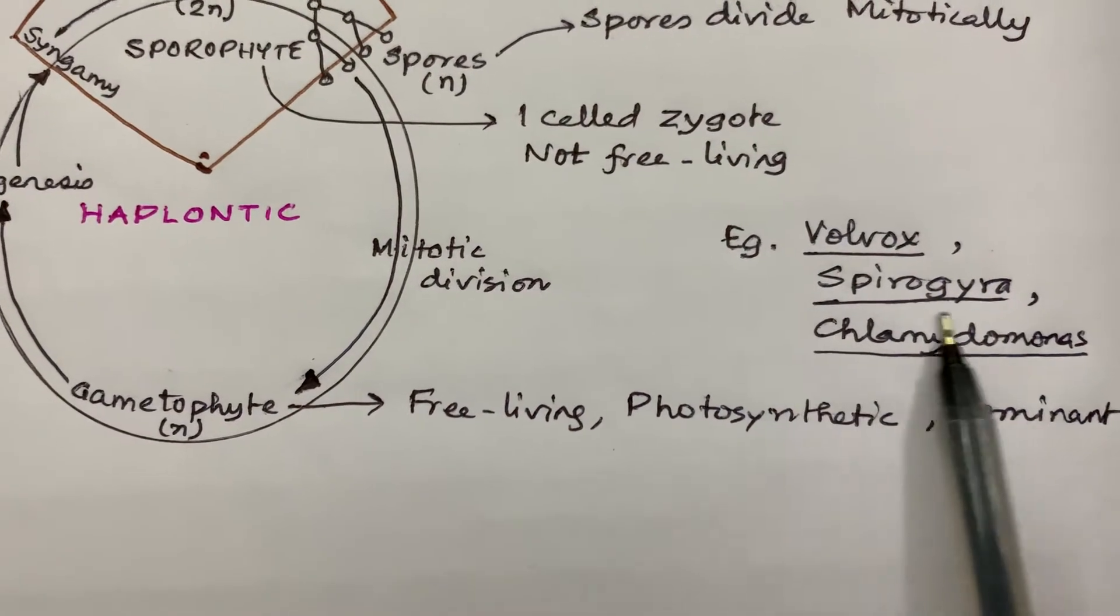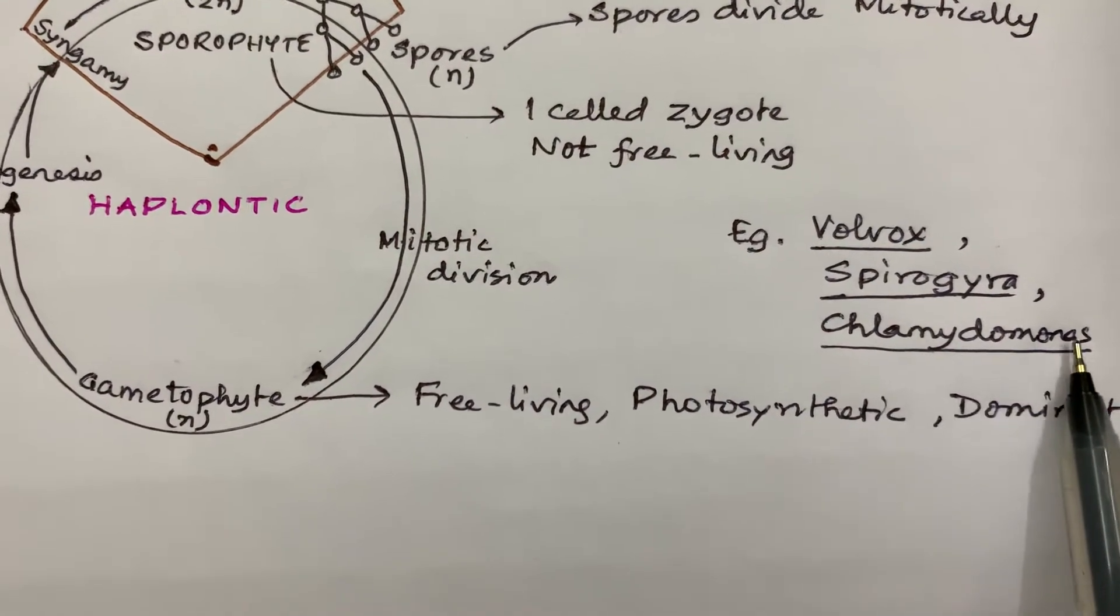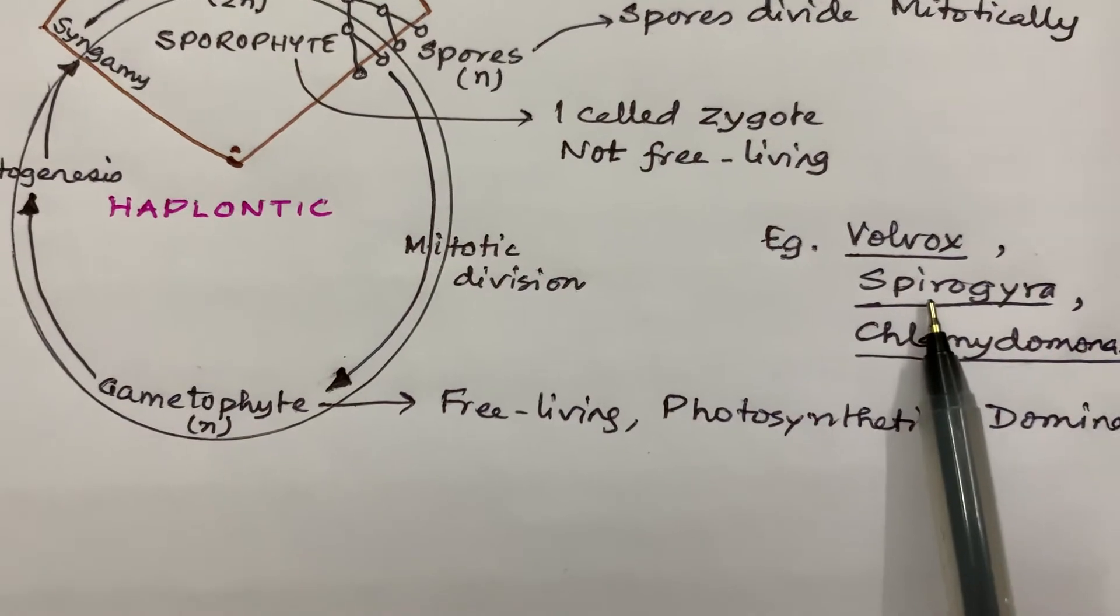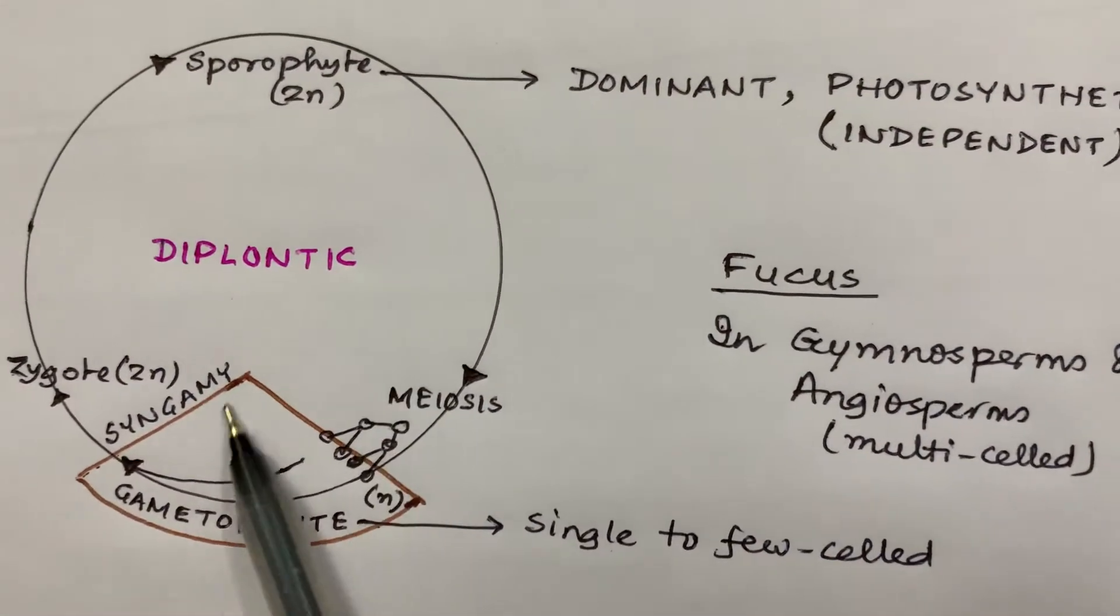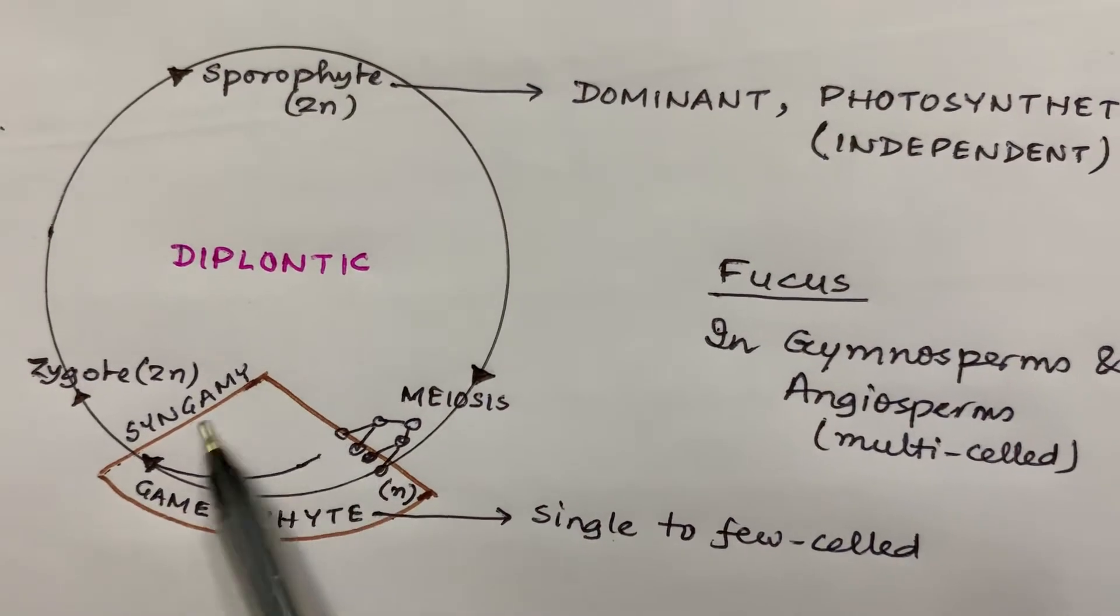The sporophyte generation is a one-celled zygote; it is not free-living. This kind of alternation of generation or life cycle occurs in Volvox, Spirogyra, and Chlamydomonas, mostly in chlorophytes.